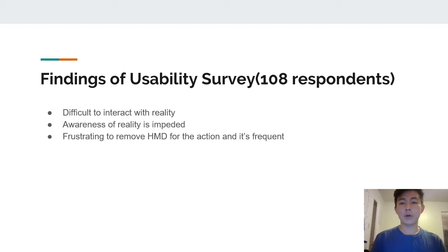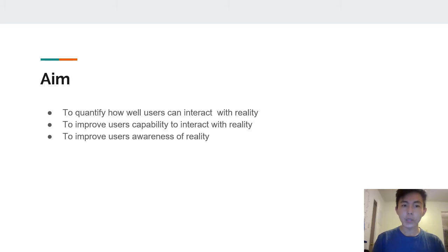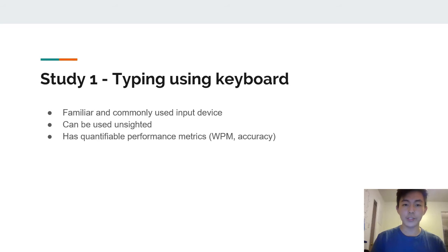Over a usability survey conducted among 108 respondents, it was found that users have been facing difficulty interacting with reality, and awareness of reality is impeded when wearing the head-mounted display. It is also frustrating to frequently remove the head-mounted display to perform actions in reality. So, this paper aims to quantify how well users can interact with reality, how to improve users' capability to interact with reality, and how to improve users' awareness of reality. To tackle each of those aims, they conducted three different studies.